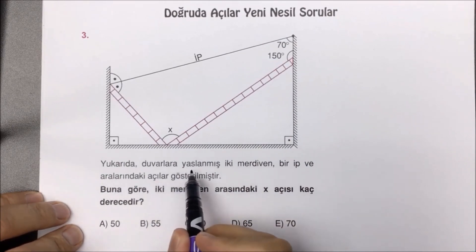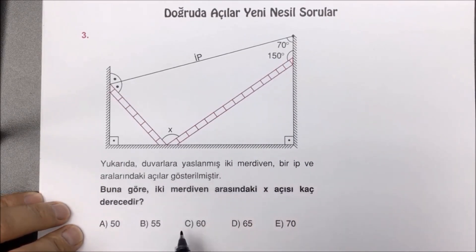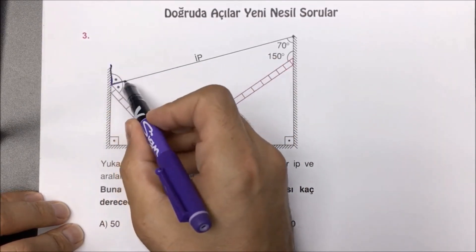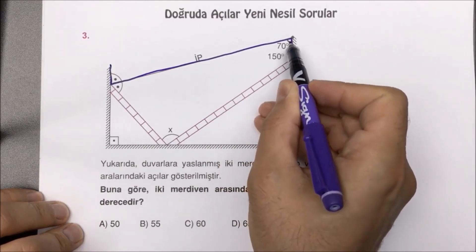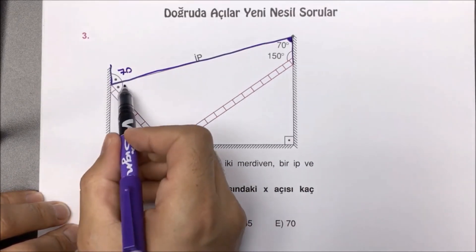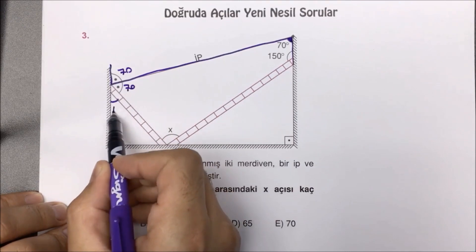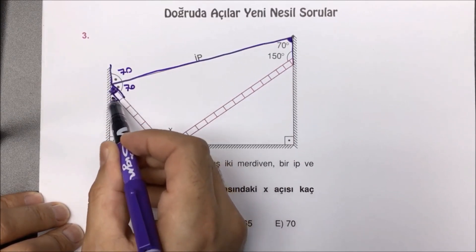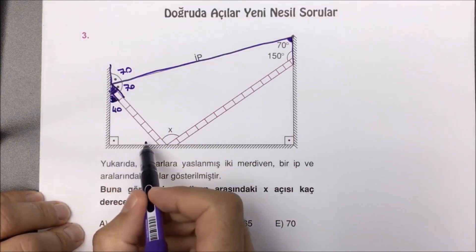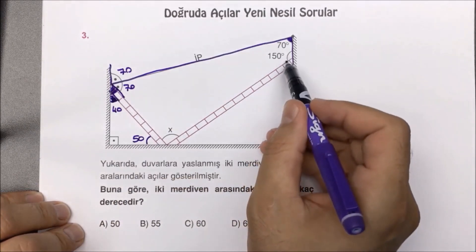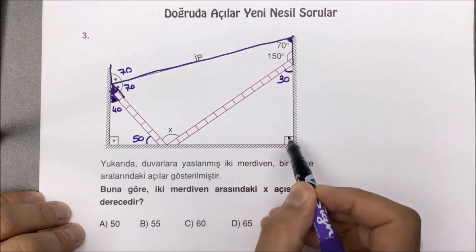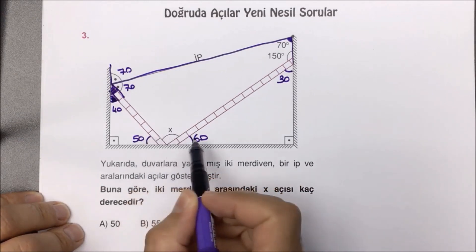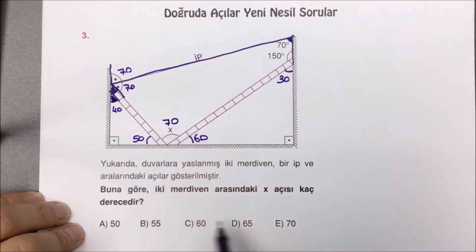Üçüncü sorumuzdayız: duvarlara yaslanmış iki merdiven ve bir ip ve aralarındaki açılar gösterilmiştir. X açısı kaçtır diye sormuş. Şuradaki 90 dereceleri gördük; Z kuralı kullanmak istiyorum. Z kuralı gereğince 70'i karşıya taşıyabiliyorum; açı ortay olduğu için 70'i oraya da yazabilirim. Tamamı 180 olması için 40 derece kalır. Şu ikisi aynı yönlü olduğu için burası da 40 derecedir. 90 eksi 40 buraya 50 derece kaldı. Burası 150 derece ise 180'e tamamladık; 30 derece. 90 eksi 30; burada 60 derece kaldı. 50 artı 60'dan 110; doğru açı gereği 180 derece lazım; aradığımız X açısı 70 derece olarak bulunmuş olur.